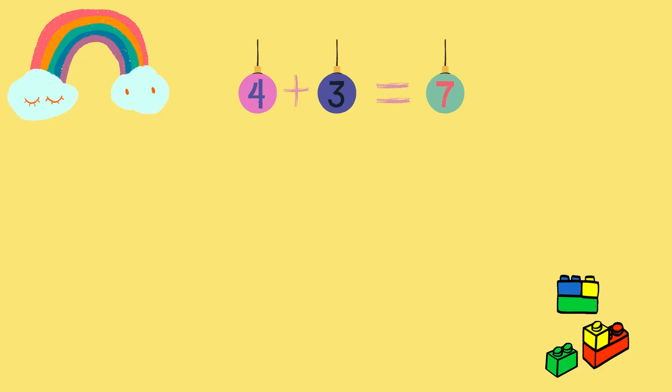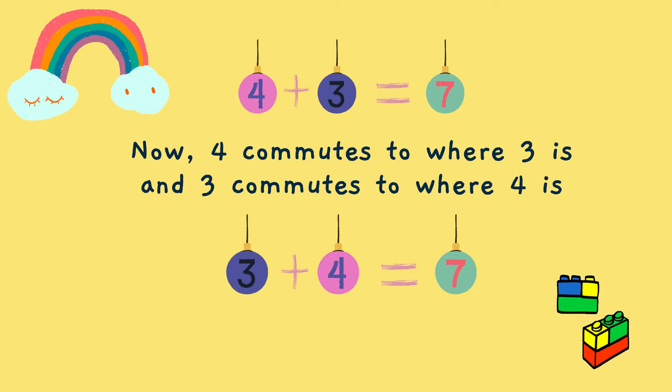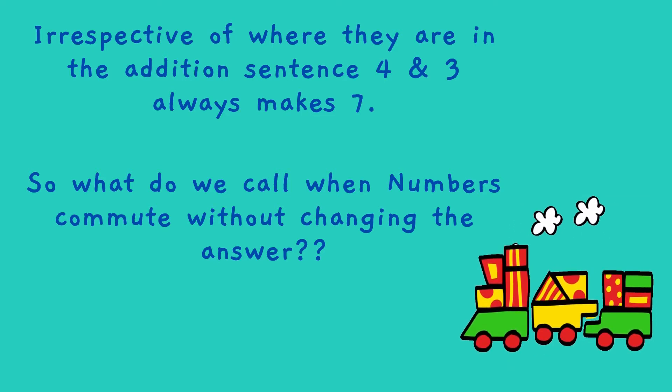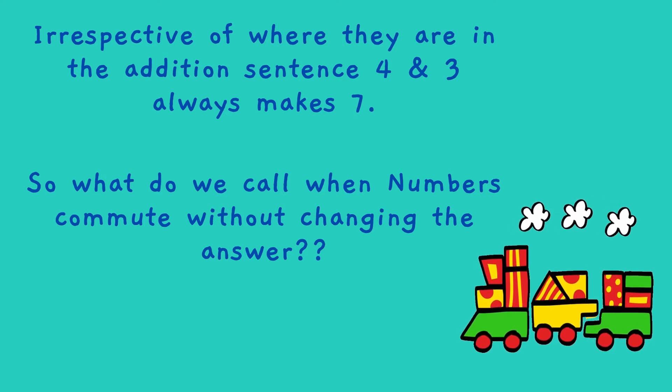Here 4 plus 3 is equal to 7. Now 4 commutes to where 3 is and 3 commutes to where 4 is. Ta-da! 3 plus 4 is also equal to 7. So no matter where 4 and 3 commute in the addition sentence, they always make 7.